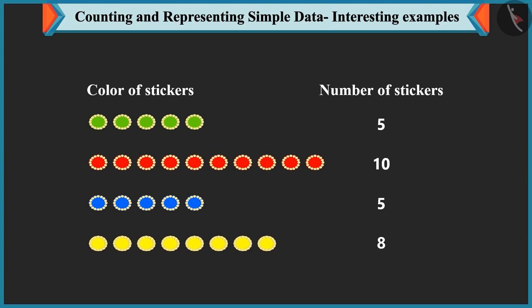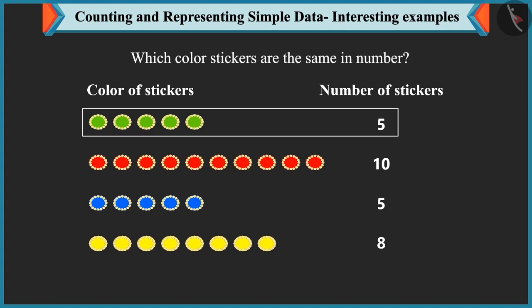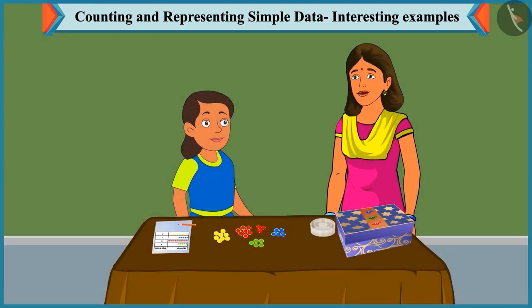Now, tell me which colour stickers are the same in number. The number of green stickers and blue stickers is five. So, green and blue colour stickers are the same in number. Well done.